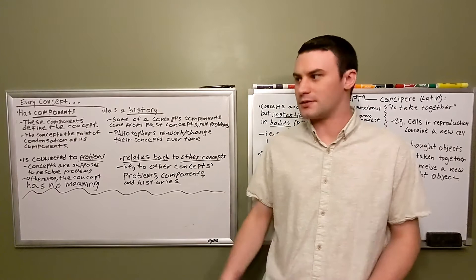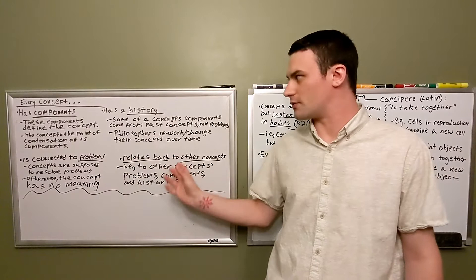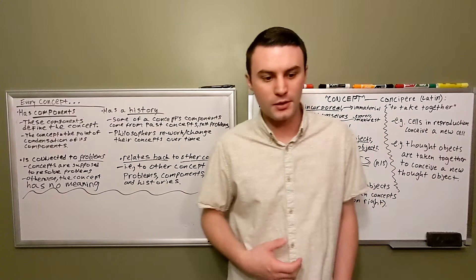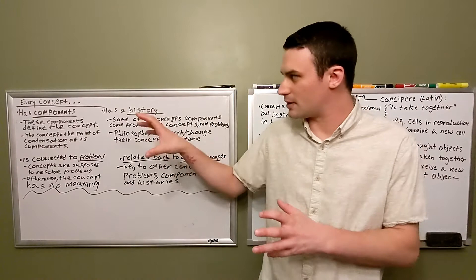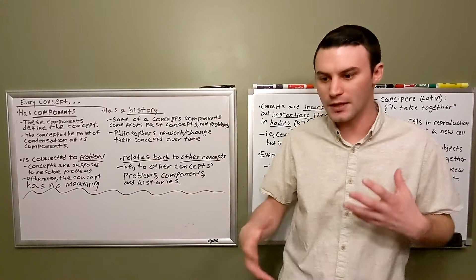The most basic of these four assertions is that every concept has components. In fact, as we'll see, these other three assertions are sort of built upon this more basic one. By basic, I of course don't mean simple. Deleuze and Guattari tell us there are no simple concepts. Rather, I just mean that the assertion that every concept has components is what allows these other assertions to emerge and makes them make sense.